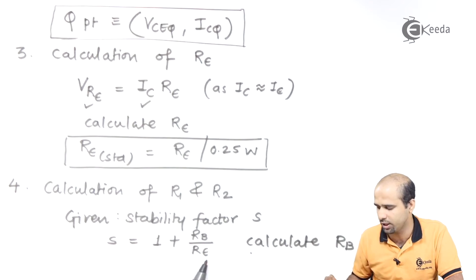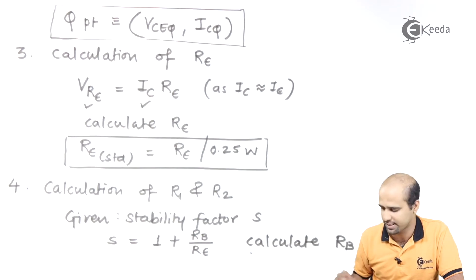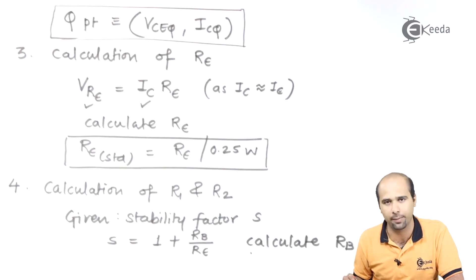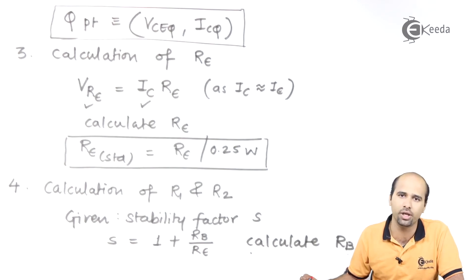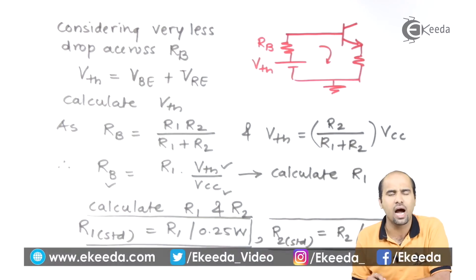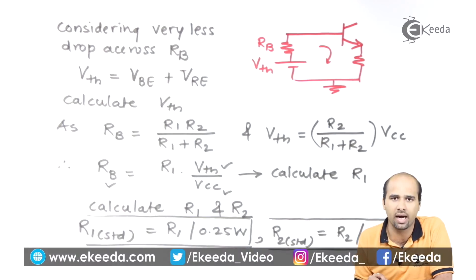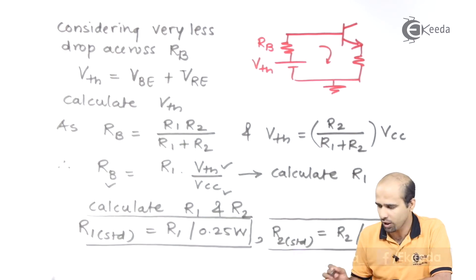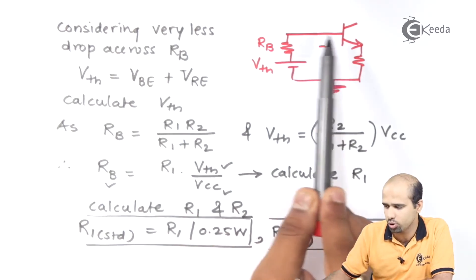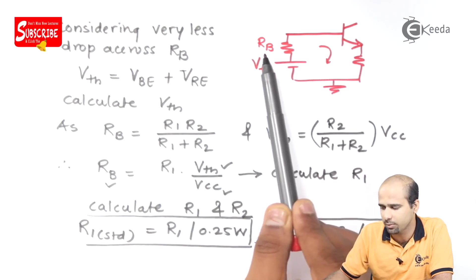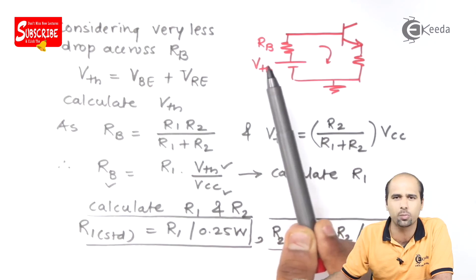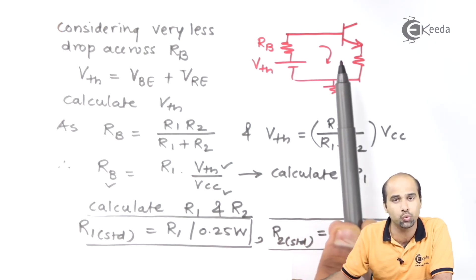For voltage divider biasing, the stability factor formula is: 1 plus RB upon RE equals stability factor. Out of these three parameters, S is given, RE is already calculated, and we just need to calculate RB — which is the parallel combination of R1 and R2. The base current is very small (in microamperes), so the voltage drop IBxRB is nearly 0.01 to 0.02 volts, which can be neglected.